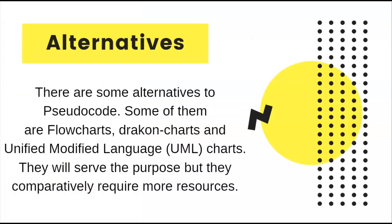The third topic is alternatives to pseudocode — things similar to it. We can consider flowcharts, which are pictorial representations. There is also Darkon chart, and UML — Unified Modeling Language — including activity and sequence diagrams. These are the alternatives. Those are all basically pictorial representations, while pseudocode uses common English statements. We can use these alternatives to represent complex or critical projects at an initial or high level.